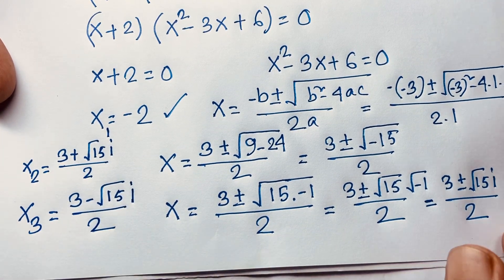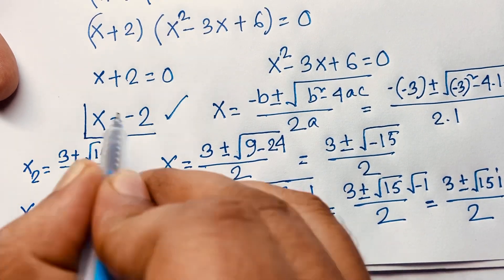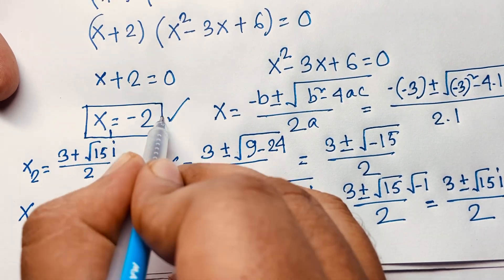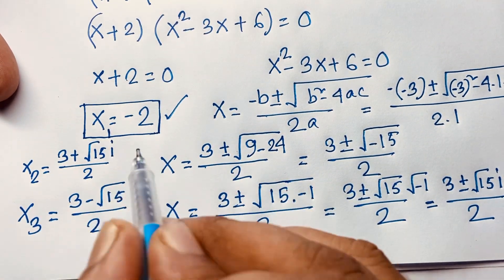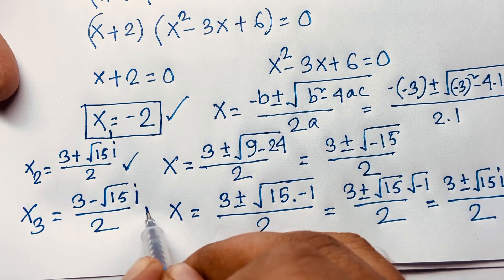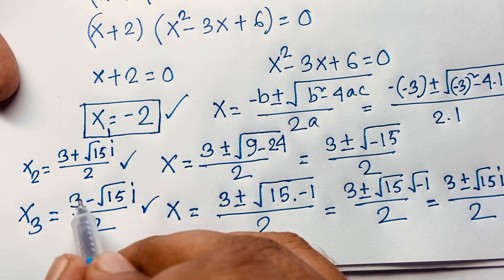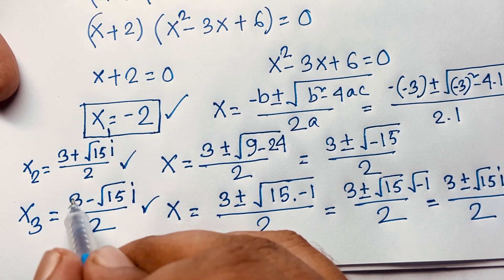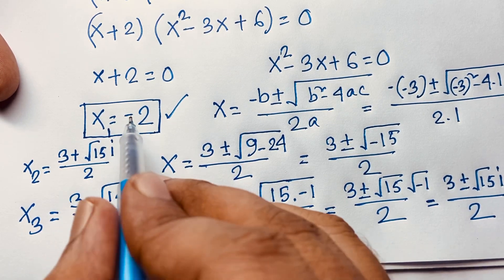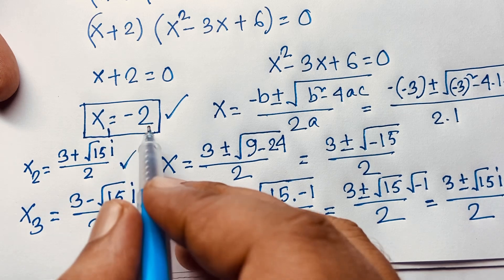So we have found three solutions. Our first solution: x₁ equals negative 2. x₂ equals 3 plus square root of 15 i over 2. x₃ equals 3 minus square root of 15 i over 2. Both x₂ and x₃ are complex number solutions, but x₁ equals negative 2 is the real solution.